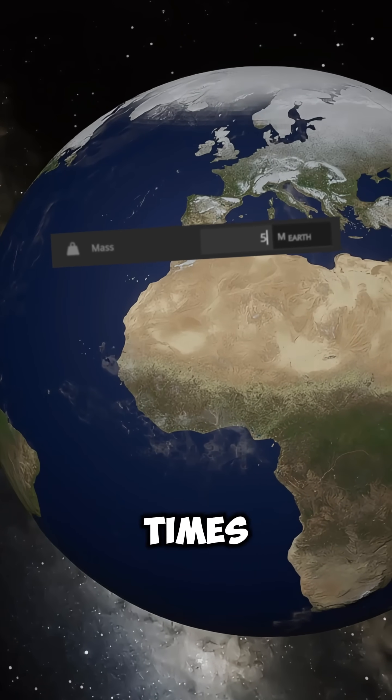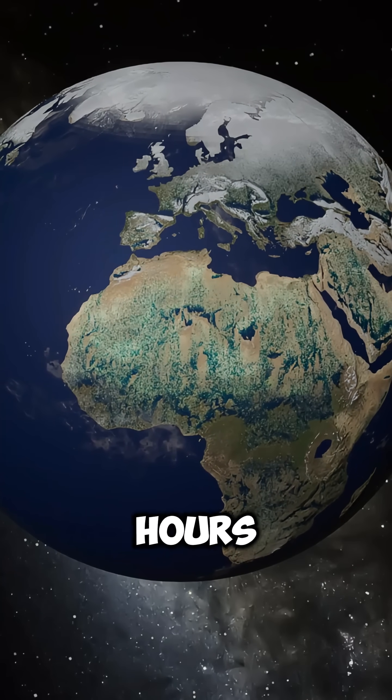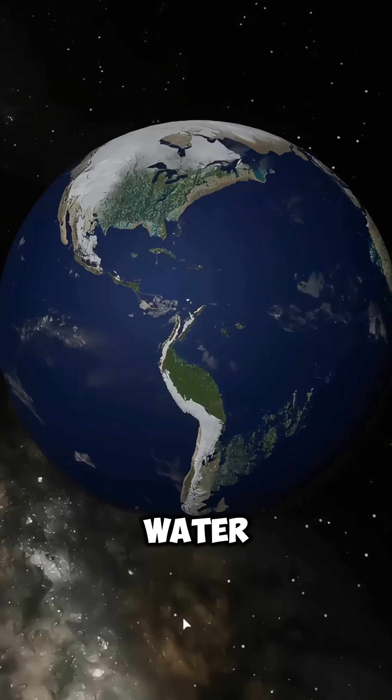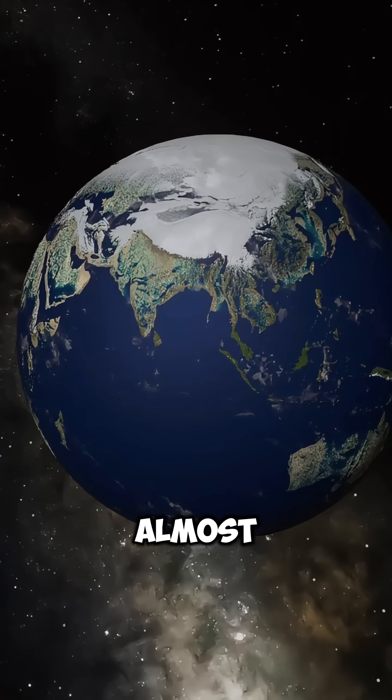First, we increase Earth's size by 5 times and shorten the length of a day to 6 hours. And look what happens - the faster rotation causes the planet to flatten at the poles, while the water gathers in the middle, swallowing almost all the continents.